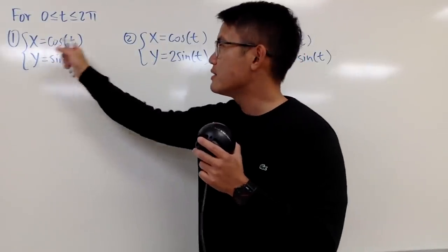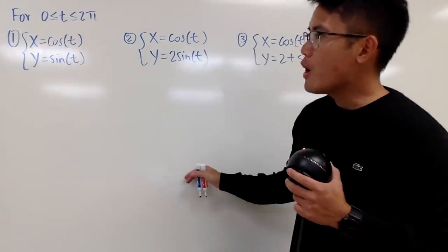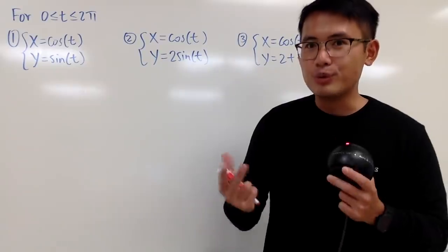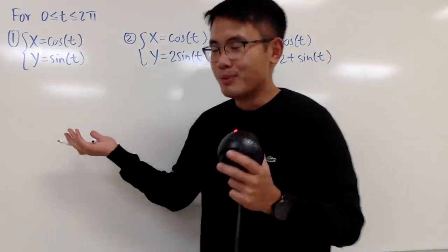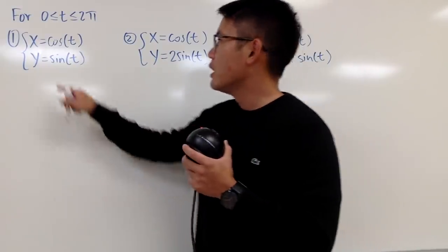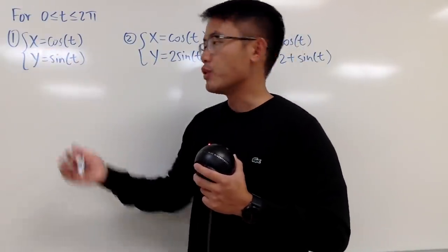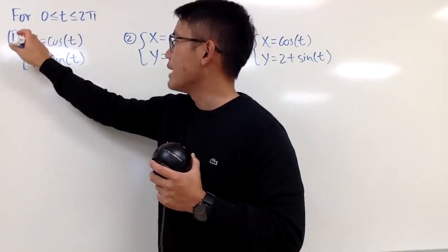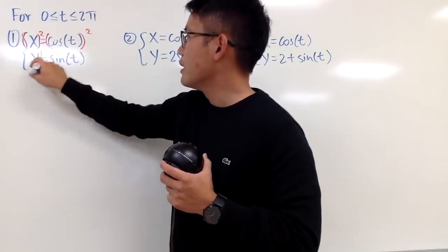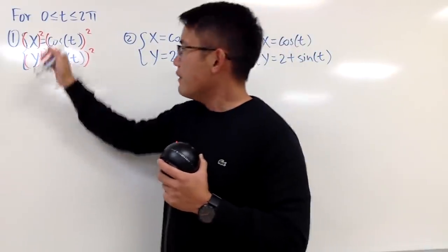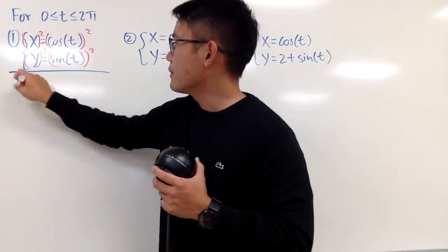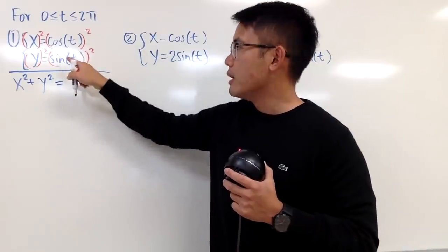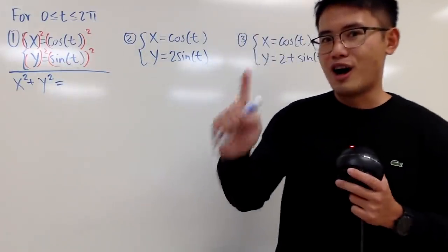Let's talk about the first one: x = cos(t) and y = sin(t). Since x is cosine and y is sine, that reminds you of the unit circle. Another way to verify it is to square both sides of each equation. On the left-hand side you get x² + y², and on the right you get cos²(t) + sin²(t), which equals 1.